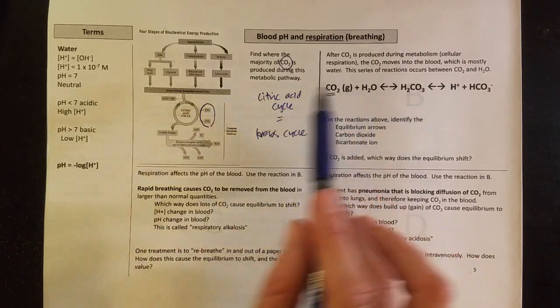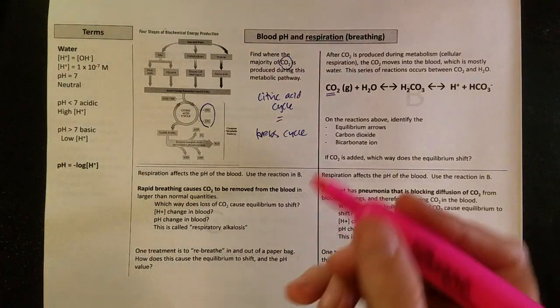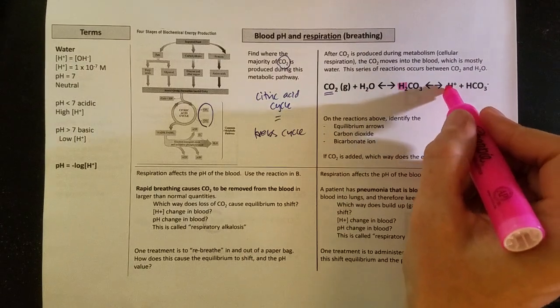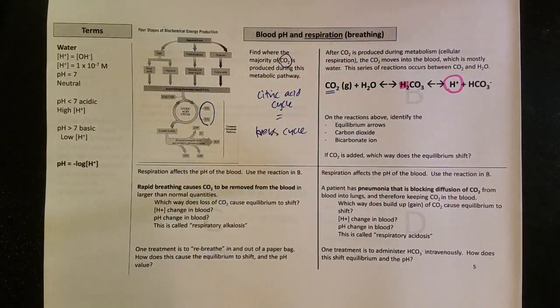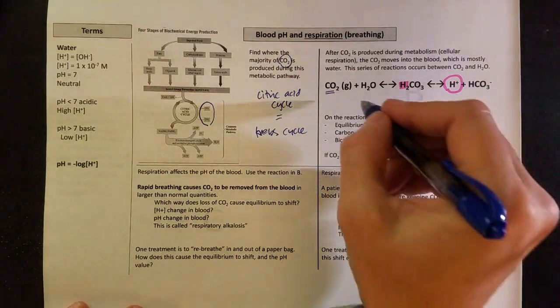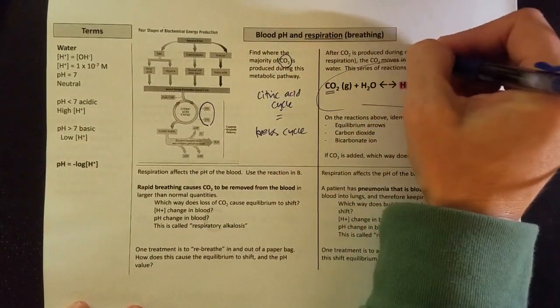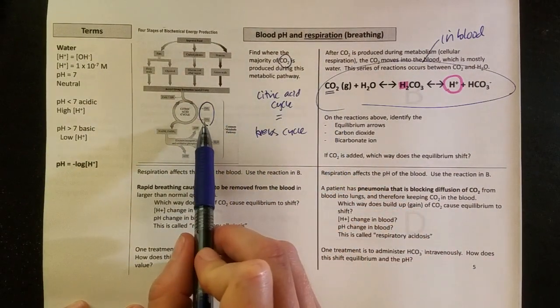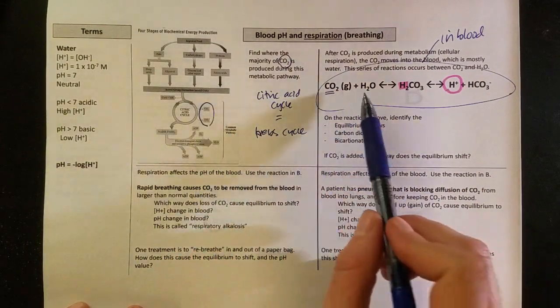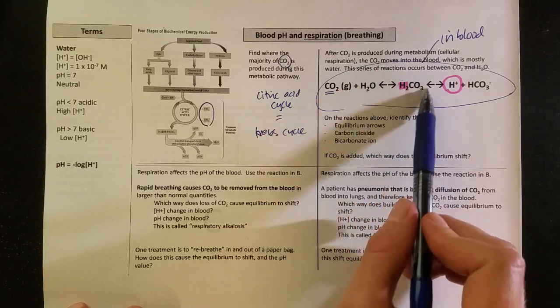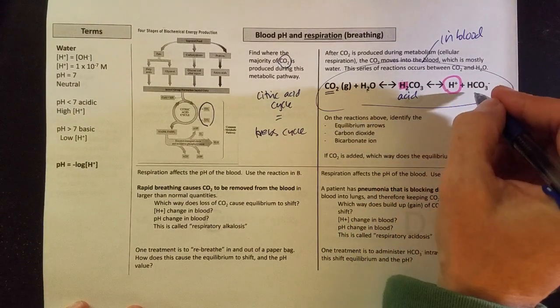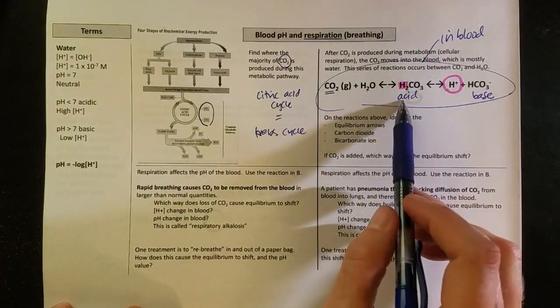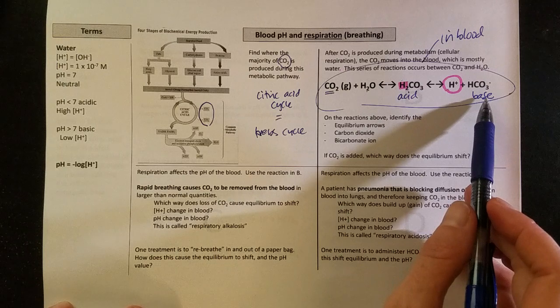But when it reacts with water, it makes carbonic acid, which is this acid with the H right here. And that carbonic acid breaks down into protons and bicarbonate ions. So this reaction is happening in our blood. As that carbon dioxide goes into your blood, which is mostly water, it mixes with water and makes an acid here. This bicarbonate actually is what we would call a base. This is ready to donate protons, this is ready to accept protons.